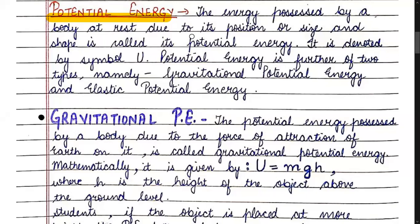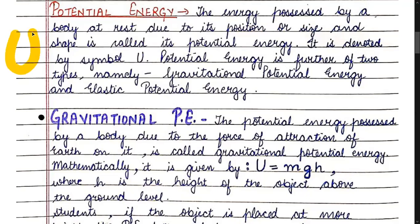In this class, we will study it in more detail. The energy possessed by a body at rest due to its position or size and shape is called its potential energy. It is denoted by the symbol capital U.